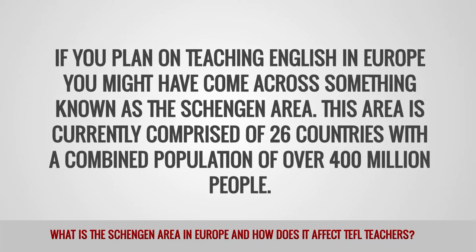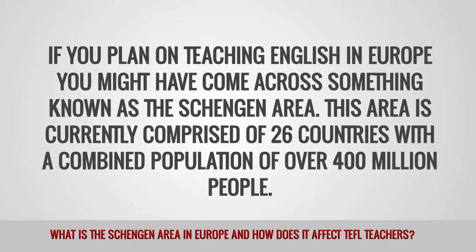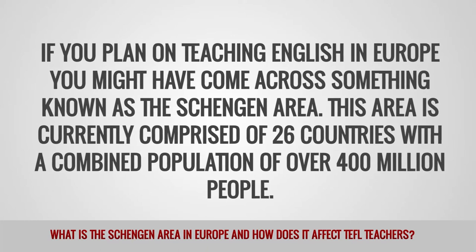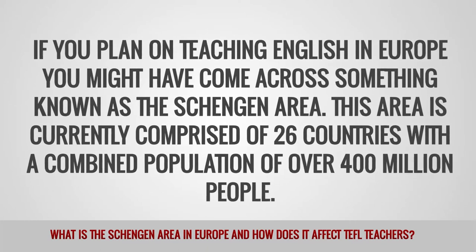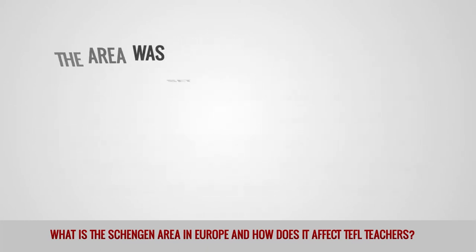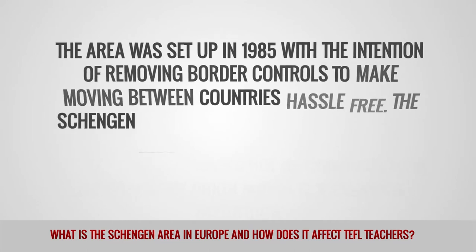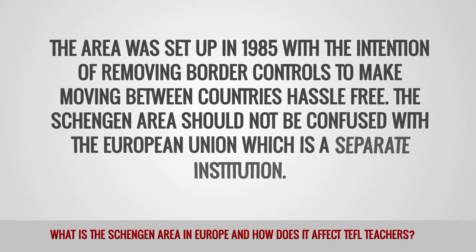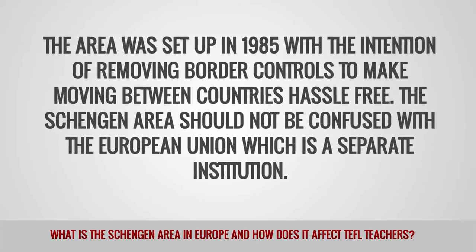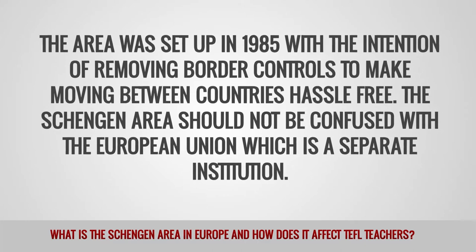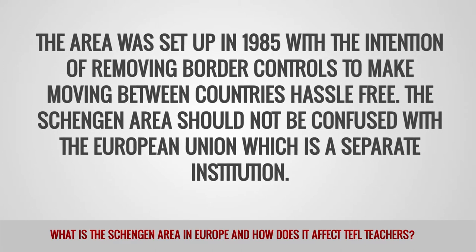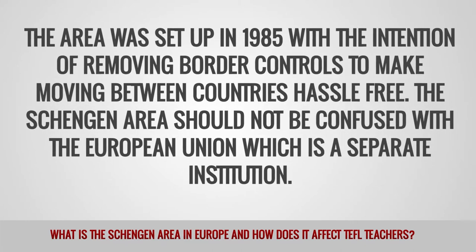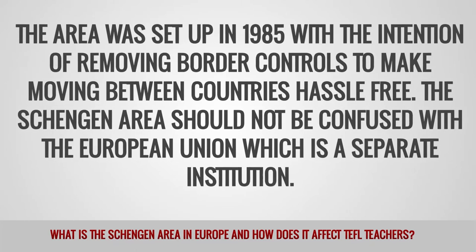This area is currently comprised of 26 countries with a combined population of over 400 million people. The area was set up in 1985 with the intention of removing border controls to make moving between countries hassle-free. The Schengen Area should not be confused with the European Union, which is a separate institution.